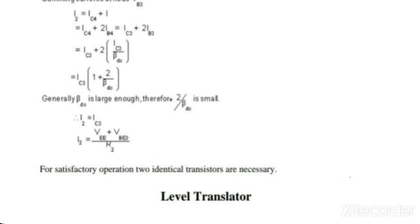We can write I2 is equal to IC3 plus 2IB3. IB3 can be written as IC3 divided by beta dc.